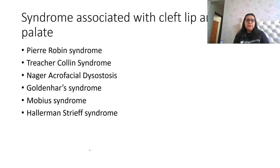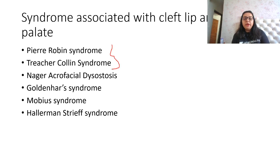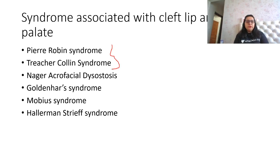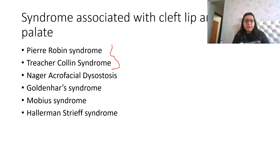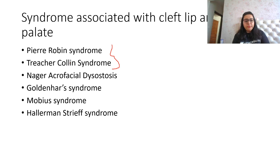Now, what are the main syndromes associated with cleft lip and cleft palate? You should know the names of each. The first two are extremely important from an exam point of view: Pierre Robin syndrome and Treacher Collins syndrome. There is also Nager acrofacial dysostosis, Goldenhar syndrome, Moebius syndrome, and Hallerman-Streiff syndrome. We will concentrate on Pierre Robin and Treacher Collins.